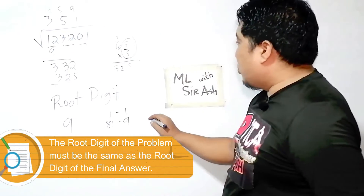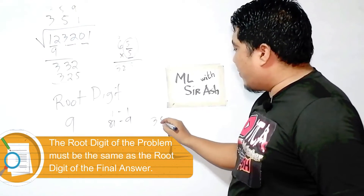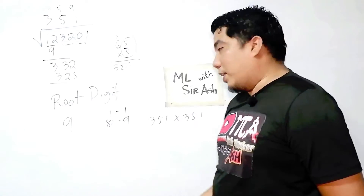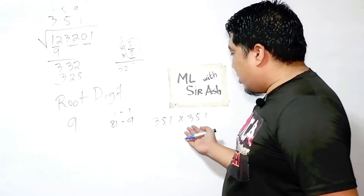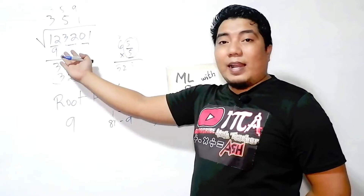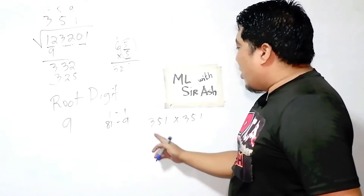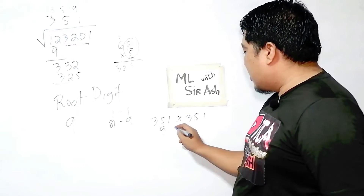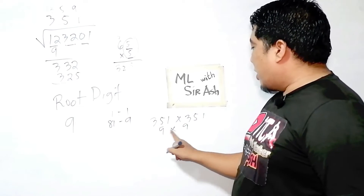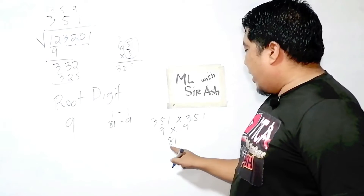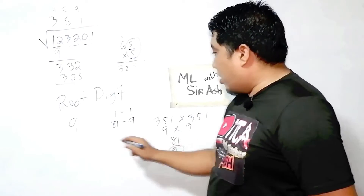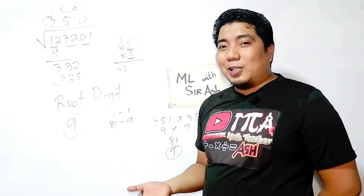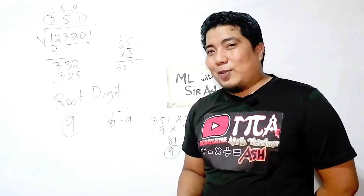Let's start with 351. We have 351 times 351. So we add the digits: 3 plus 5 is 8, plus 1 is 9. So the digit sum of 351 is 9. Since this is a square root, you multiply 9 times 9, that is 81. And 8 plus 1 is 9. The root digit matches, so we already have our final answer: 351.